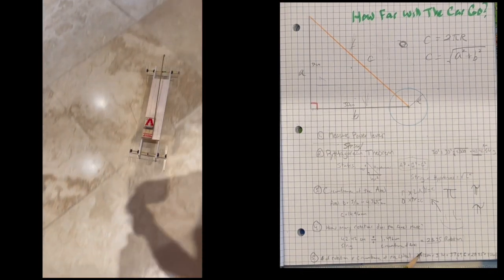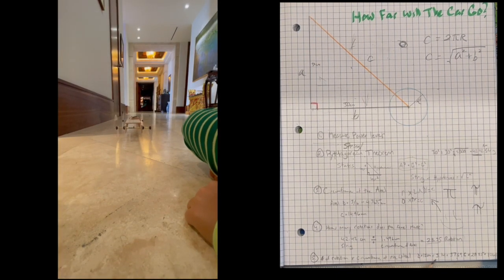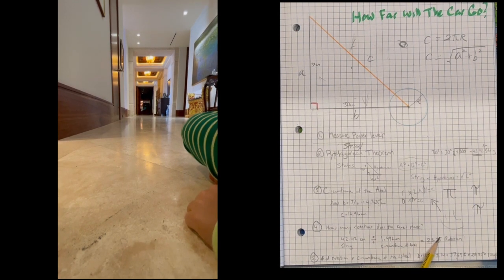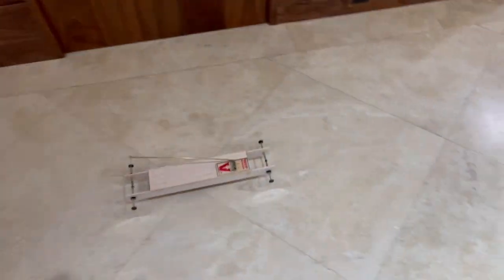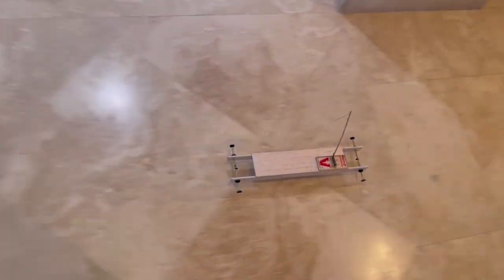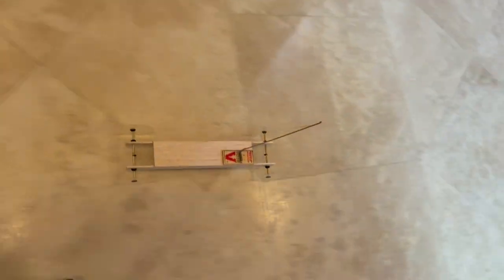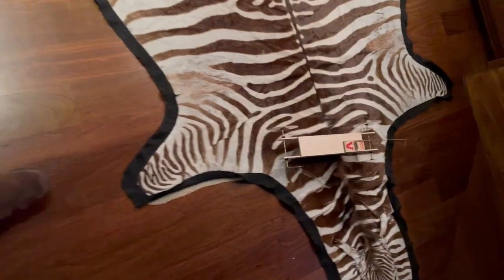The wheel diameter equals 12 centimeters. 12 centimeters times pi equals 37.69 centimeters. Times the rotations equals 1063 centimeters, or a little over 10 meters. That's how far the car will go.